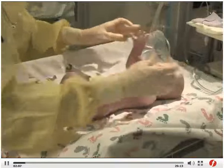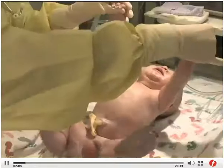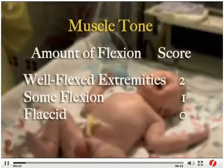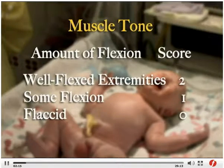Evaluate muscle tone of a full term infant by noting the amount of flexion. Well flexed extremities receive a score of two, some flexion a score of one, and if the infant is flaccid, the score is zero.